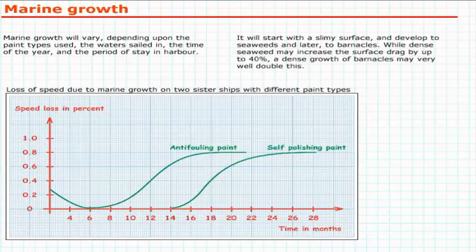While dense seaweed may increase the surface drag by up to 40%, a dense growth of barnacles may very well double this.